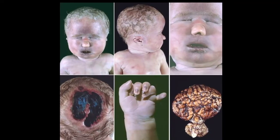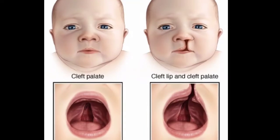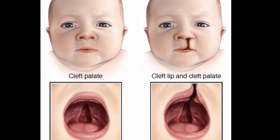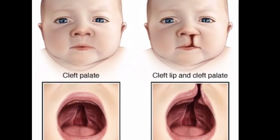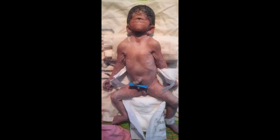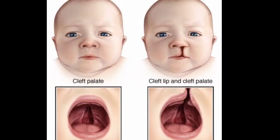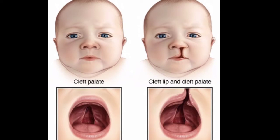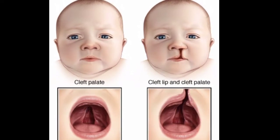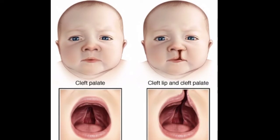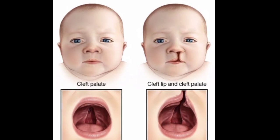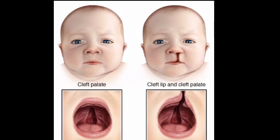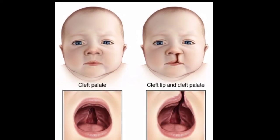Treatment and care for holoprosencephaly are supportive and based on the specific medical issues present for an individual child. An endocrinology evaluation should be performed to assess for pituitary abnormalities. A neurologist should be involved in the child's care and can guide treatment for seizures if present. Plastic reconstructive surgery of cleft lip and palate or other facial features may be needed. A developmental pediatrician can help direct developmental therapies, and a clinical genetics evaluation and genetic counseling should be obtained for patients and their families once the diagnosis is made.